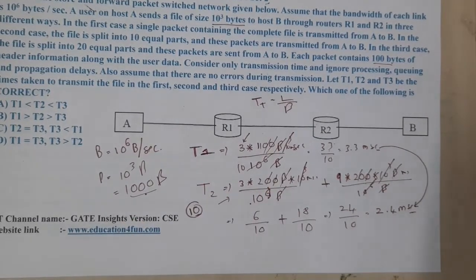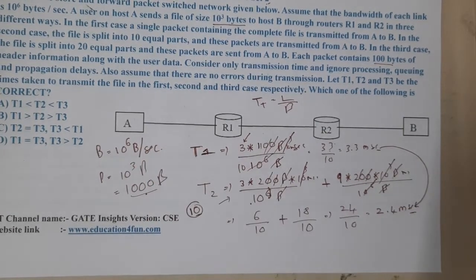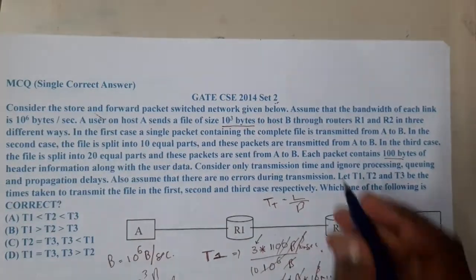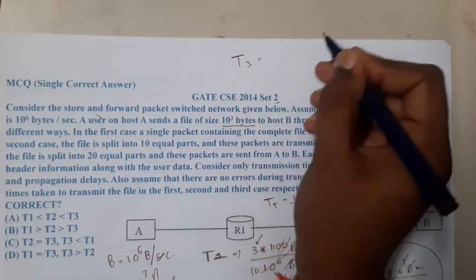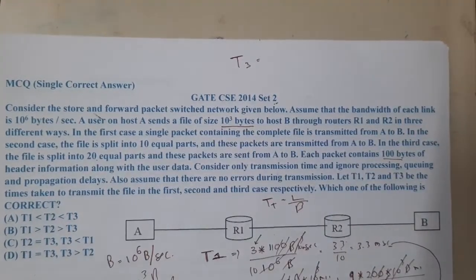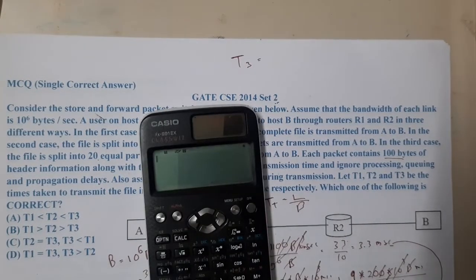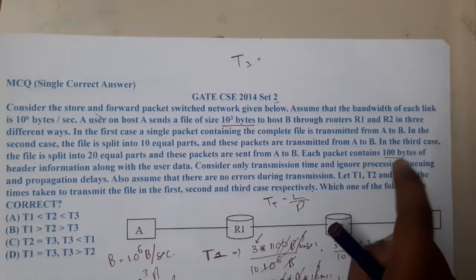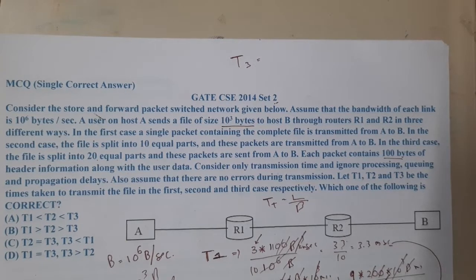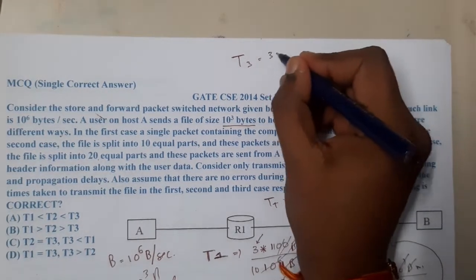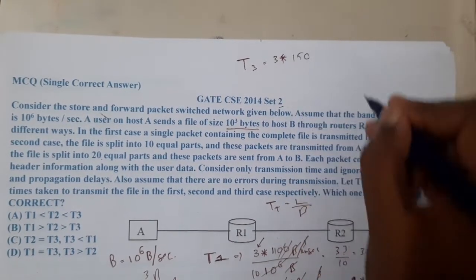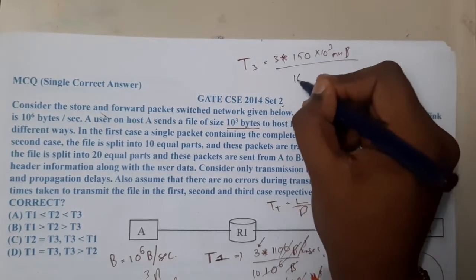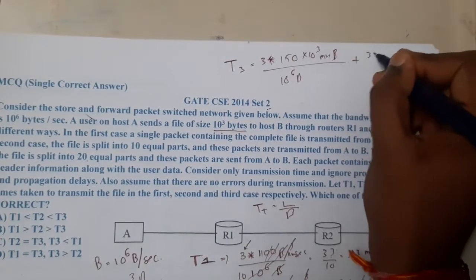So by breaking the file into packets we were able to send the data faster. That advantage is the concept of pipelining — everything runs in parallel. Now let us calculate T3. We divided the file into 20 pieces, so each piece is 50 bytes of data plus 100 bytes of header, giving 150 bytes per packet. Note the header is double the data size here.